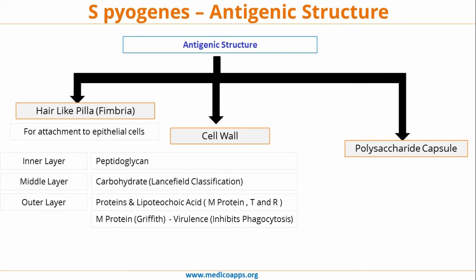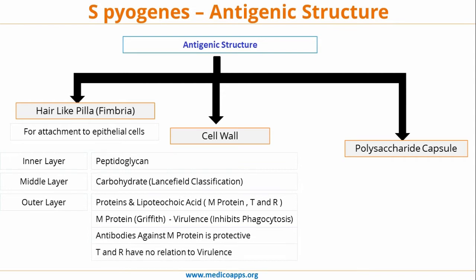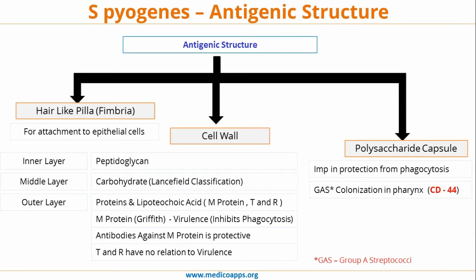Finally, the outer layer is made of proteins and lipoteichoic acid. The M protein and T and R proteins. M protein is used in Griffith classification and it decides virulence — basically M protein inhibits phagocytosis, and antibodies against M protein are protective, whereas T and R have no relation to virulence. Moving to polysaccharide: Group A streptococci elaborate various degrees of polysaccharide capsule composed of hyaluronic acid. Capsular polysaccharides play an important role in protecting Group A streptococci from phagocytosis.